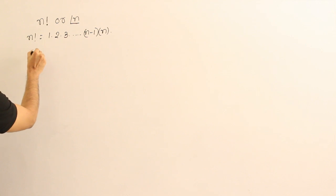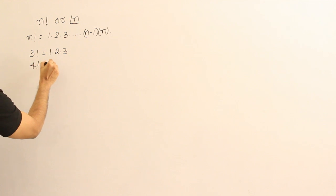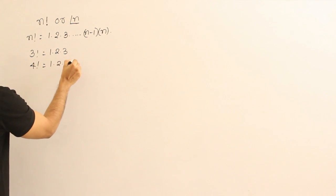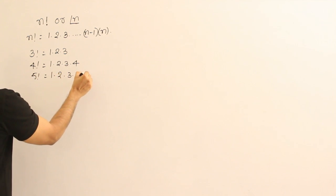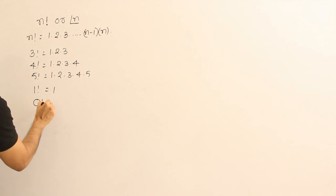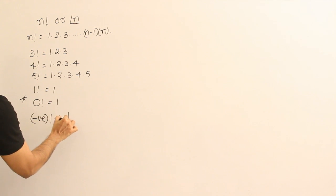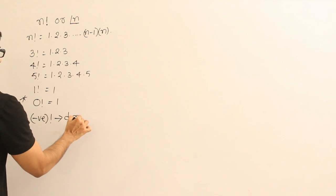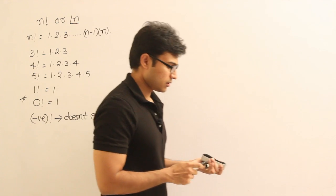For example, 3 factorial is 1 × 2 × 3; 4 factorial is 1 × 2 × 3 × 4; 5 factorial is 1 × 2 × 3 × 4 × 5. 1 factorial is simply 1. One important thing: 0 factorial is not 0 — 0 factorial is 1, remember that. And if you have a negative number and want to find its factorial, it does not exist — the factorial of a negative number does not exist.